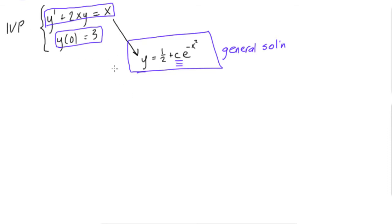So to solve for the actual solution, which is a solution that satisfies the differential equation and the initial conditions, we just apply the initial conditions to the general solution.